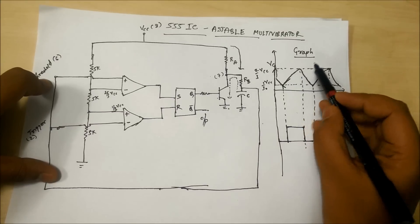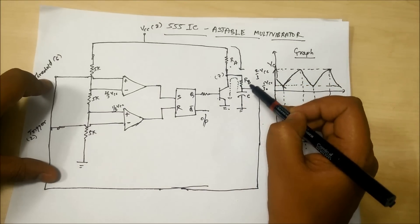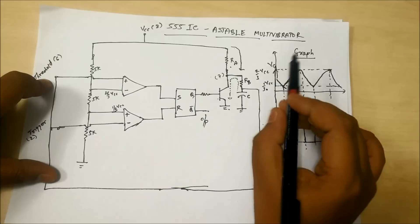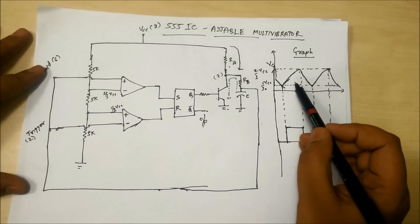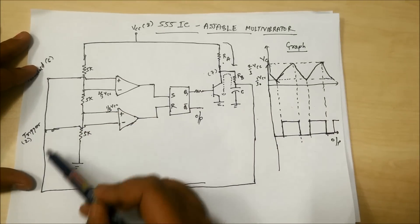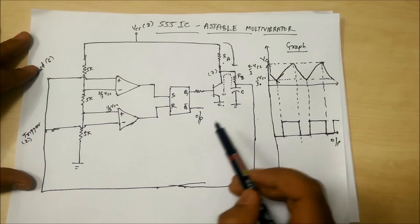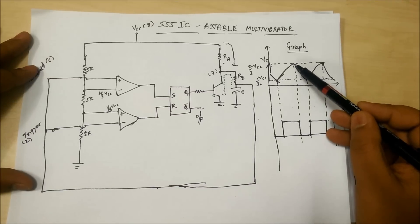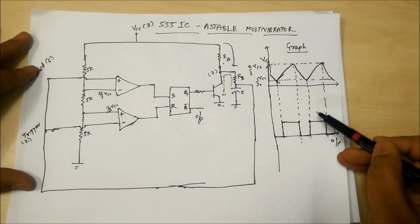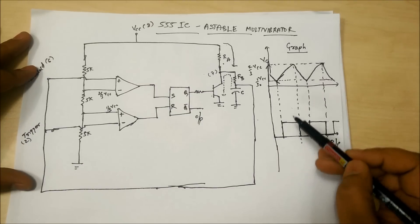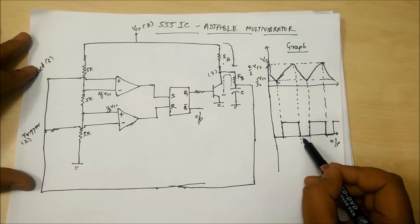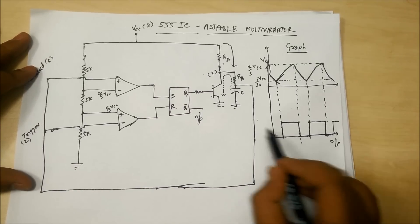The charging time is more because the capacitor charges through both RA and RB, while the discharging time is less because it discharges only through RB. Without applying any external trigger input — simply by shorting the threshold and trigger pins and connecting them to the capacitor voltage — as it reaches 2/3 VCC the output becomes low, and as it falls to 1/3 VCC the output becomes high. Neither state is stable for an indefinite period, therefore this is called an astable multivibrator.